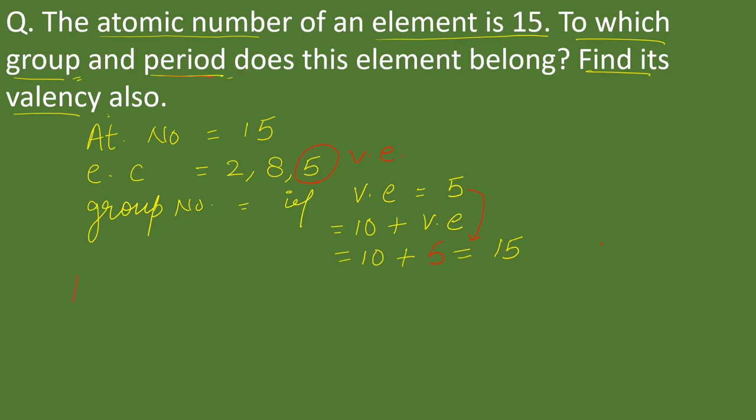Now second is calculation of period. Period number is equal to number of valence shells. Any element has as many valence shells as represent its period number.